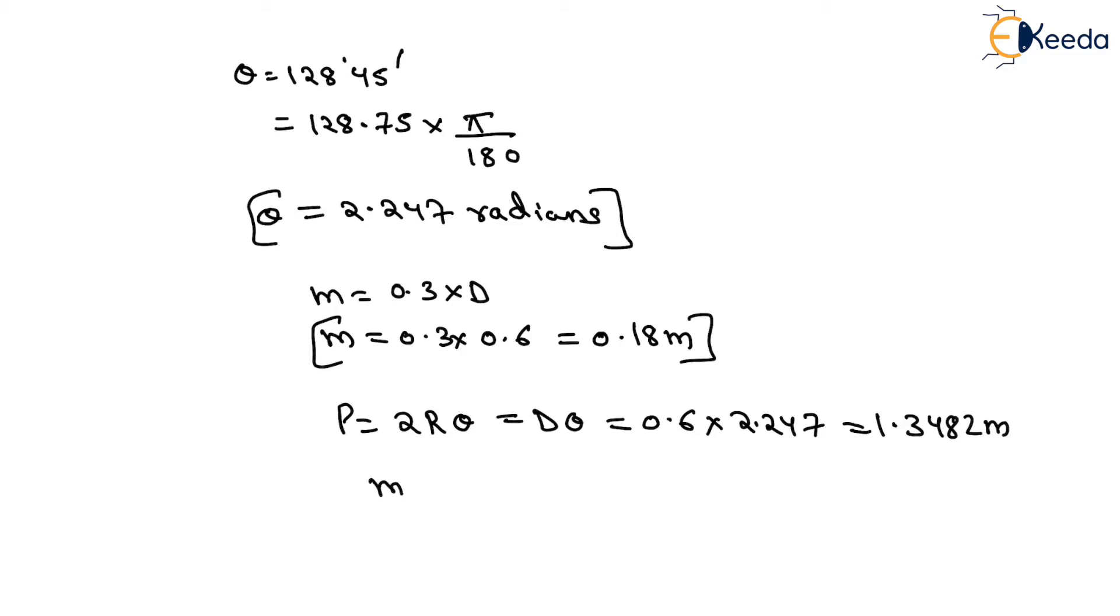Now, hydraulic mean depth M will be equals to A by P, so it will be equals to 0.18. Area A will be equals to 0.18P. We will put the value of P here which will be equals to 0.18 into 1.3482. On solving this, we will have the area equals to 0.2426 meter square.